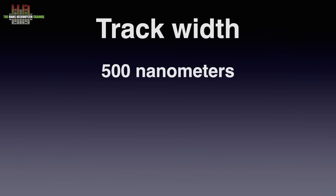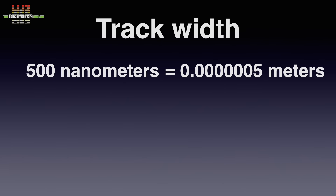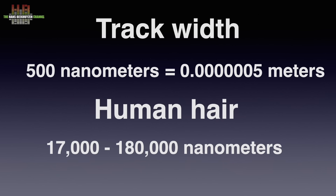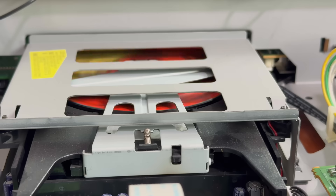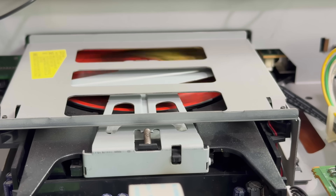The track is 500 nm wide — that is 0.0000005 meters. A human hair is 17,000 to 180,000 nm wide, so 34 to 360 times thicker. To get an idea, try counting bricks as you walk over them. The pits in the CD are even smaller by comparison. CDs are made from polycarbonate, a flexible material. They vibrate due to rotation, so the laser must constantly adapt its focus. Reading without errors is quite an achievement, which is why CIRC error correction is used. When it fails, the player interpolates, filling in missing data to avoid glitches.